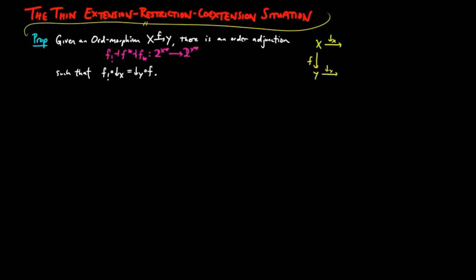We call f lower shriek the f-extension, f upper star the f-restriction, and f lower star the f-coextension, respectively.